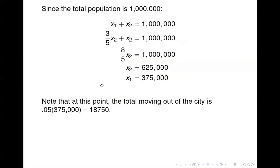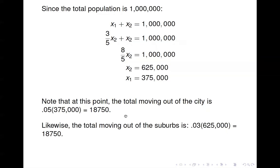We've reached the steady state: the number moving out of the city is 0.05 times 375,000, which is 18,750. Likewise, three percent of the suburban population of 625,000 is also 18,750. So the number moving out of the city equals the number moving in — there's no net population change once the system reaches this point.